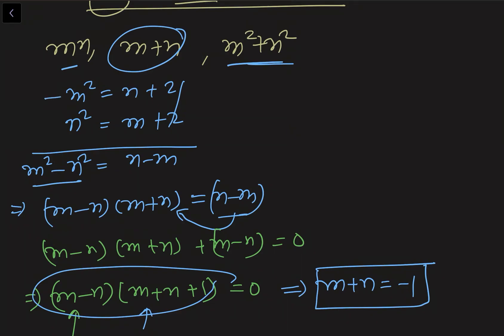Now see here it is m², here it is n². Now if I add these two equations what I am getting is m² + n² = m + n + 4. And what is m + n? That is -1. So -1 + 4 we are getting 3. So we got the value of m² + n² as well. So this thing also got sorted out. So now we are left with this mn.